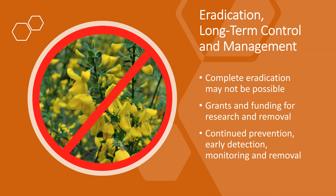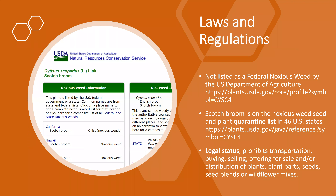Eradication, long-term control and management: complete eradication may not be possible — it is incredibly costly and takes a huge amount of manpower. Grants and funding can help with research and removal and continued prevention, early detection, monitoring, and removal. This plant is considered a noxious weed under the quarantine list in 46 states, though it is not listed as a federal noxious weed. There is information about it on the U.S. Department of Agriculture website. When on the quarantine list in a state, it prohibits the transportation, buying, selling, offering for sale, and distribution of the plant, plant parts, seeds, seed blends, or wildflower mixes.